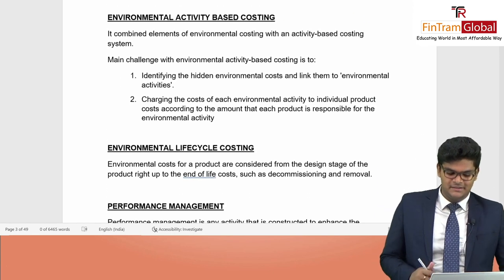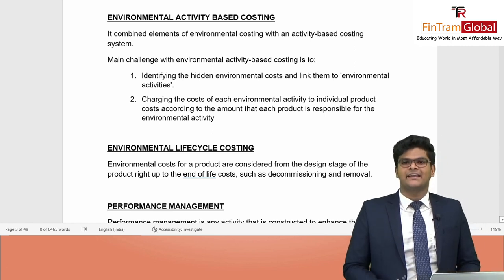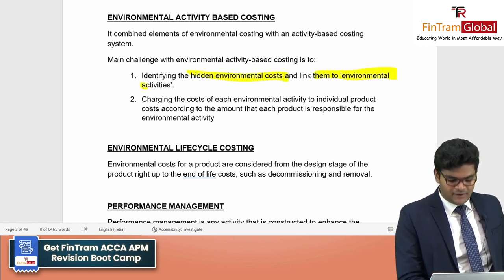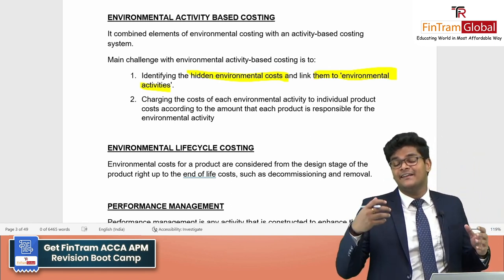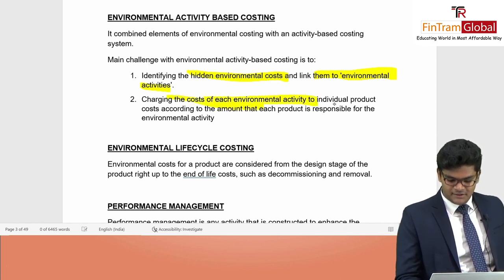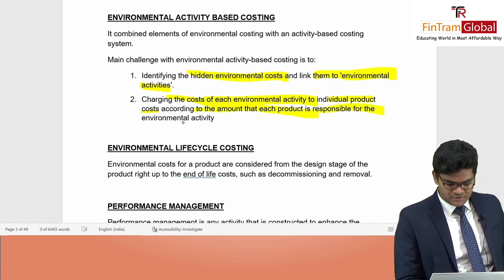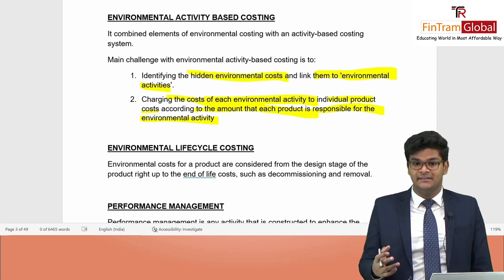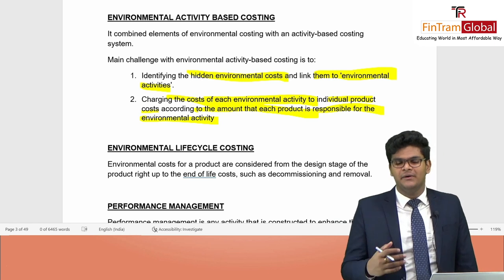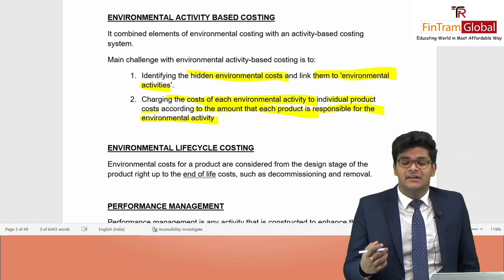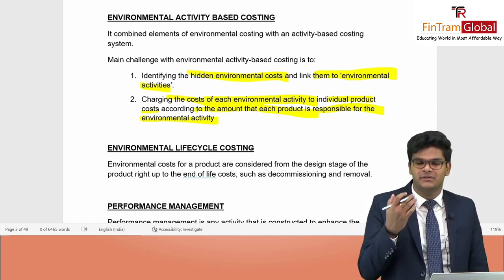Environmental Activity-Based Costing combines elements of environmental costing with ABC. The main challenge is identifying hidden environmental costs and linking them to environmental activities. It is also difficult to determine the driving factors for these costs and calculate the final cost for each activity. However, if the benefit exceeds the cost of implementing this technique, it is worth pursuing.